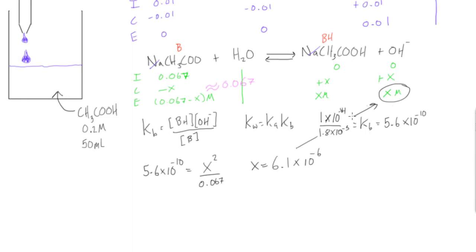Now we have our x value which is the same as this x value. Our concentration of OH minus is 6.1 times 10 to the negative 6 molar. From there what we can do is find our pOH, which is going to be equal to the negative log of the concentration of OH minus. So that's negative log of 6.1 times 10 to the negative 6. This value, our pOH, is 5.2.